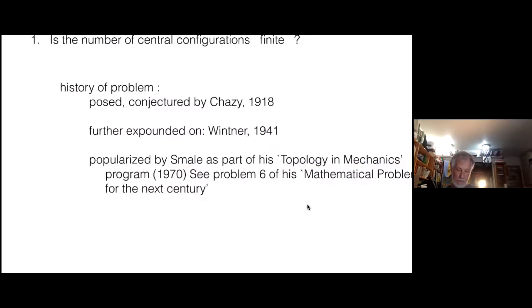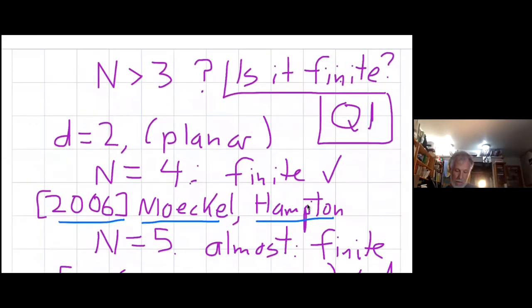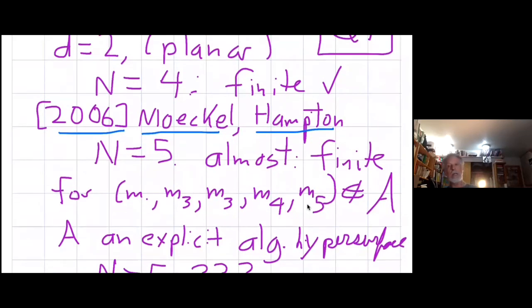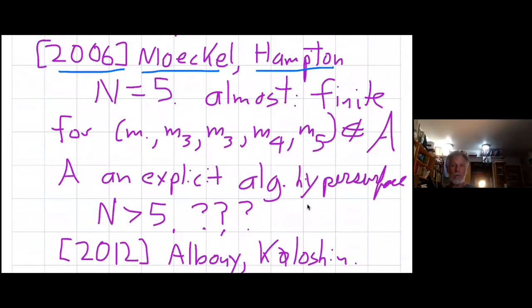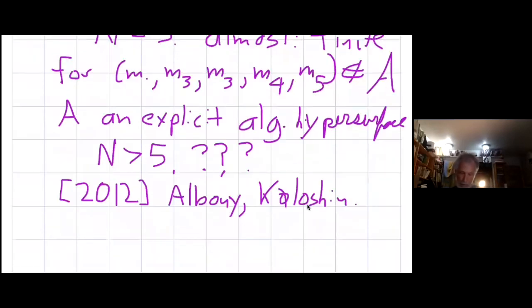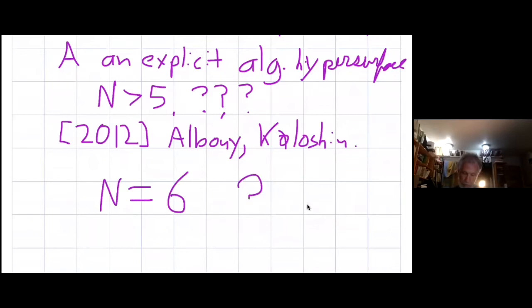He had this two-paper series called Topology and Mechanics, which was pre-Foundations of Mechanics. And it was a basic part of his program. And then again, in 2000, in answer to Hilbert's problems, he published at the behest of Arnold, Mathematical Problems for the Next Century. And this is problem six of his problems for the next century. Six years after Smale asked it, Moeckel and Hampton answered it for N equals four. So for four bodies in the plane, we know the answer is finite.